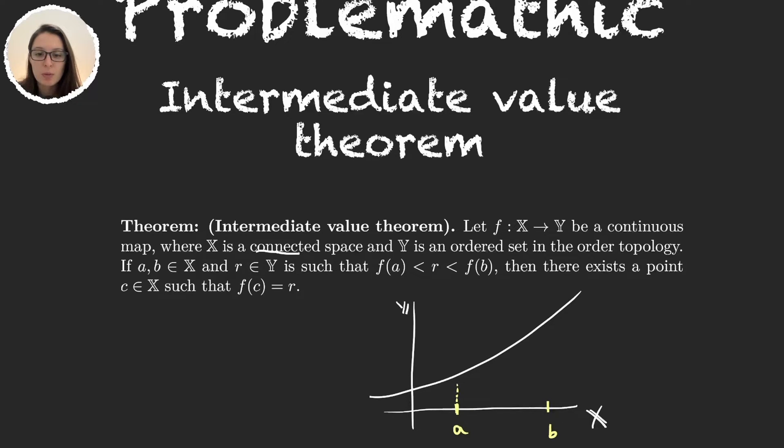Here we have f of a and f of b. So what the theorem is telling us is whenever we grab some element r that is between f of a and f of b—remember that we can do this because Y is an ordered set—